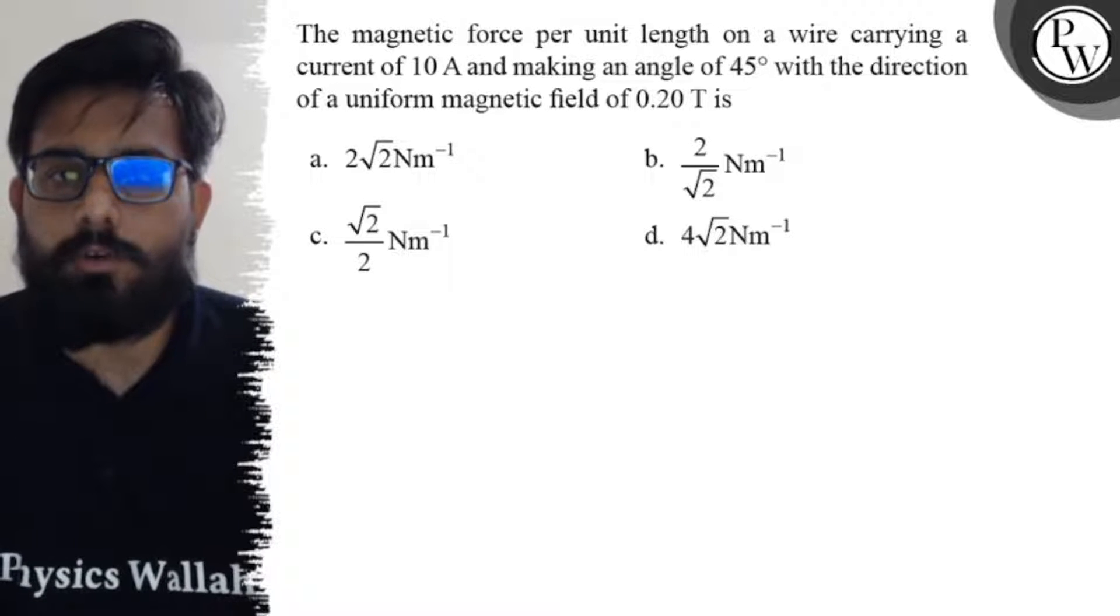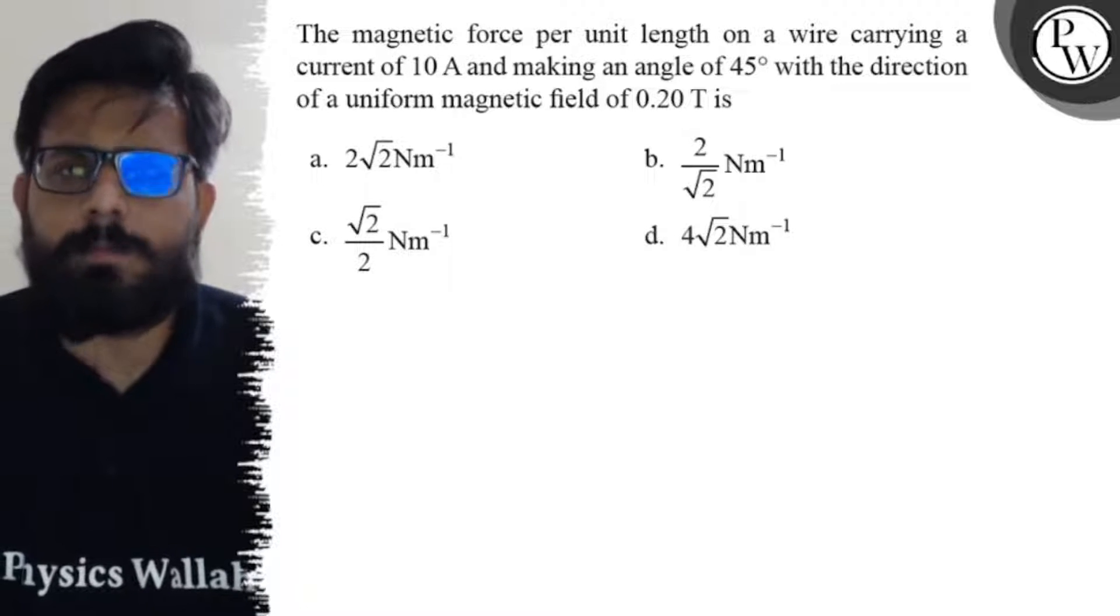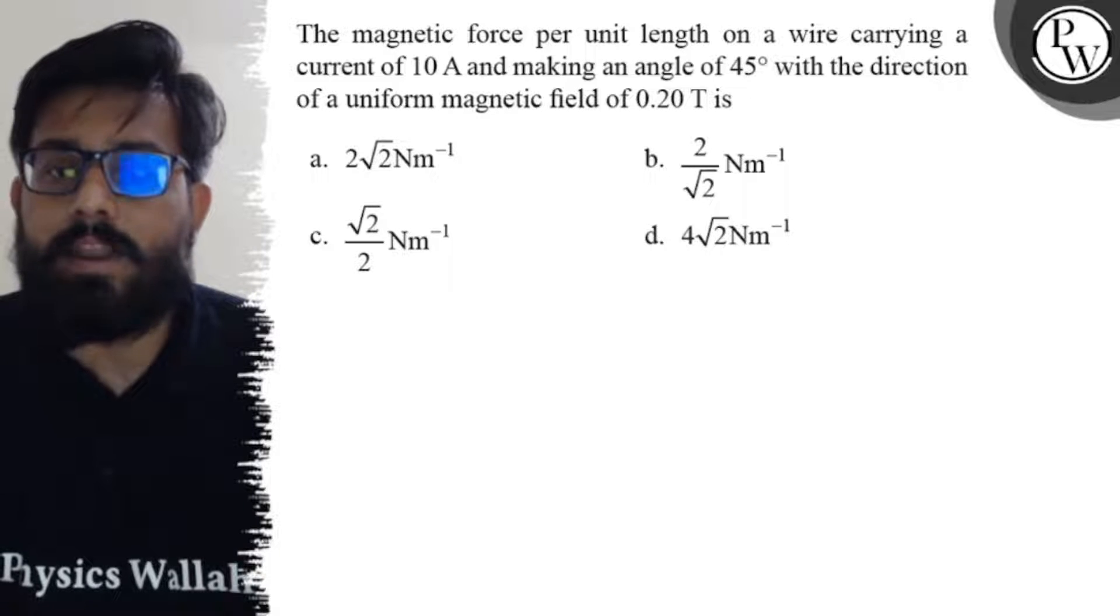your first option is 2√2 newton per meter, second option is 2/√2 newton per meter, third option is √2/2 newton per meter and your fourth option is 4√2 newton per meter.